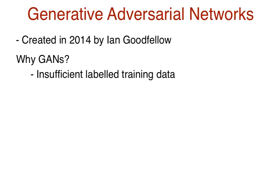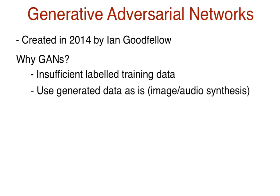Semi-supervised learning is used when some of your data is labeled while the rest is not. We may have a labeled dataset, but it may not be enough to train a model. In this case, we could generate unlabeled data using GANs, and so a semi-supervised approach is appropriate. Furthermore, the generated data could also be used as-is, like in the examples mentioned before about face image synthesis.